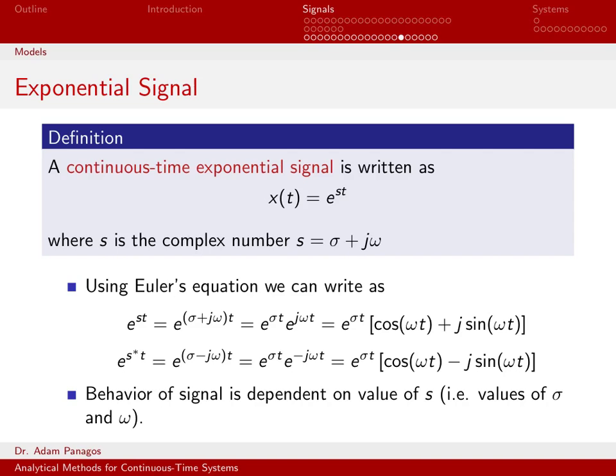s, in general, is a complex number, and we break it down into real and imaginary parts. The real part we denote as sigma, and the imaginary part we denote as j omega. So in general, s can be a complex number.